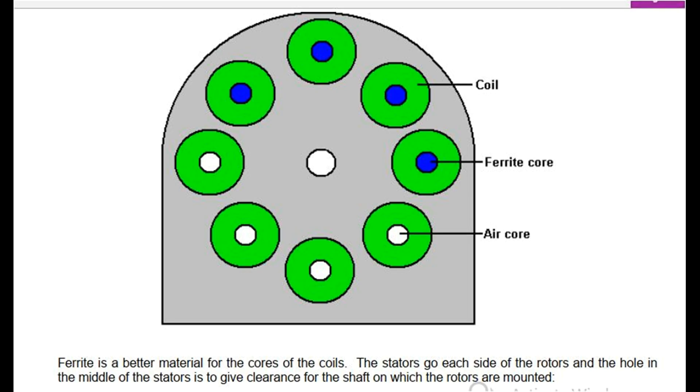Ferrite is a better material for the cores of the coils. The stators go on each side of the rotors and the hole in the middle of the stators is to give clearance for the shaft on which the rotors are mounted.